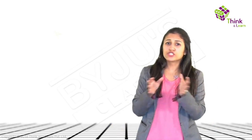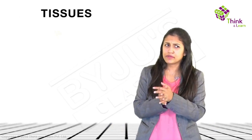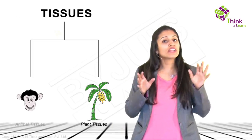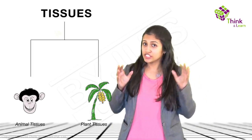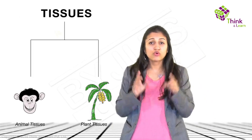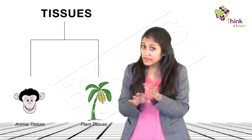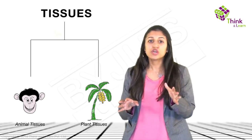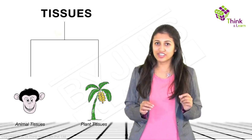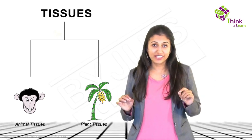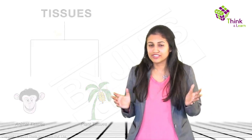Now, the broadest classification of tissues happens based on whether it's a plant or an animal, because only they have tissues — although completely different types with very different structures and very, very different functions.